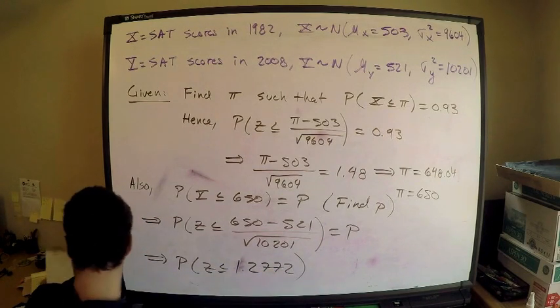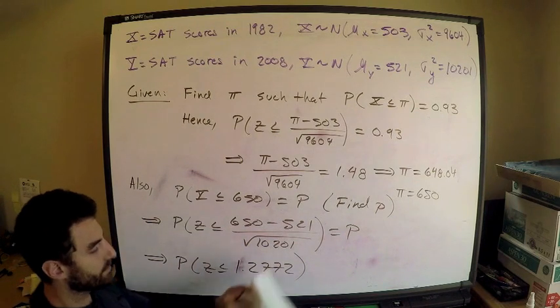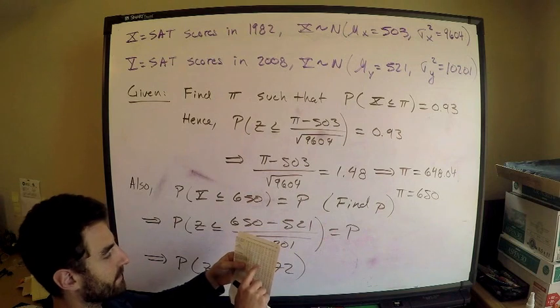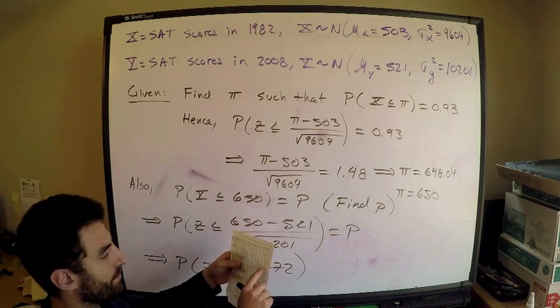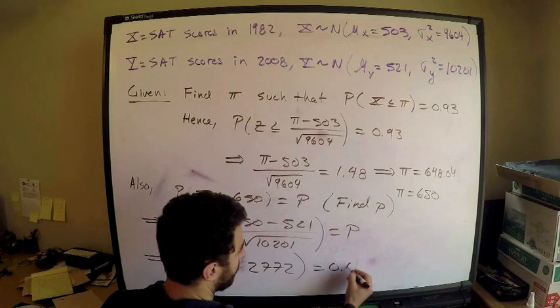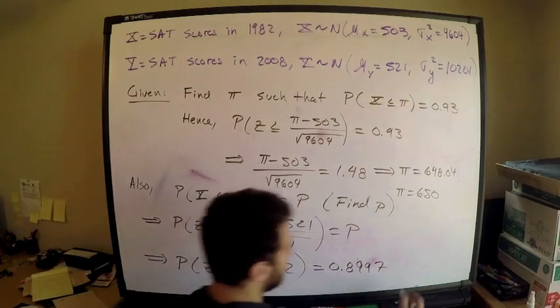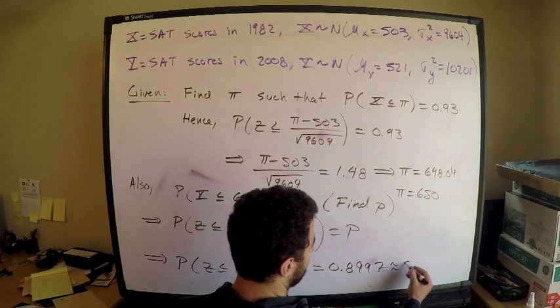When I look at my Z score, 1.28, 1.28 is 0.8997. If you round this, this is 90th percentile.